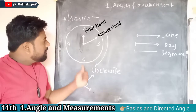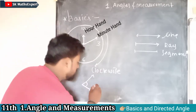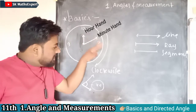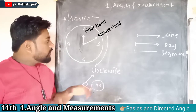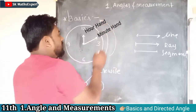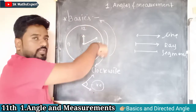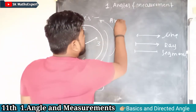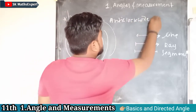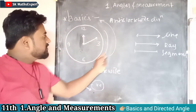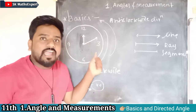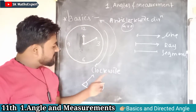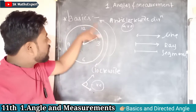The angle between the minute hand and the hour hand in clockwise direction must be negative. So remember: if the direction is clockwise, the angle must be negative. In the opposite way, if the two rays rotate in the other direction — that direction is called anti-clockwise direction — and in anti-clockwise direction, the angle must be positive.